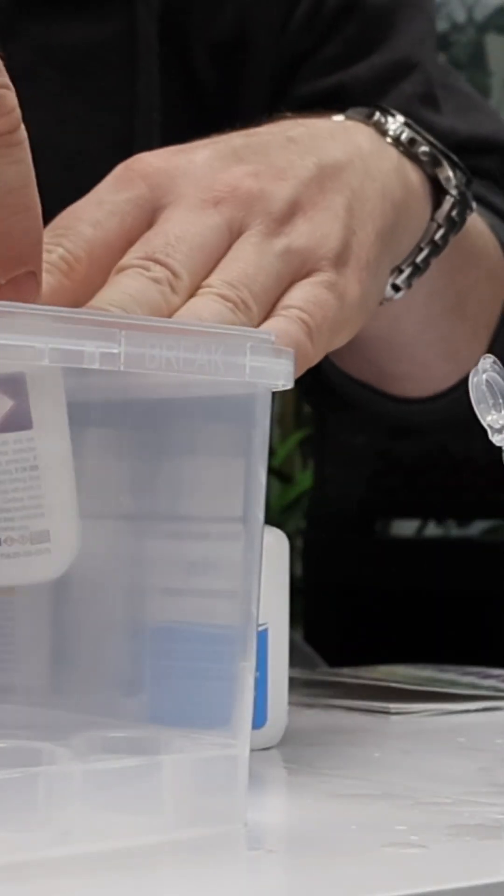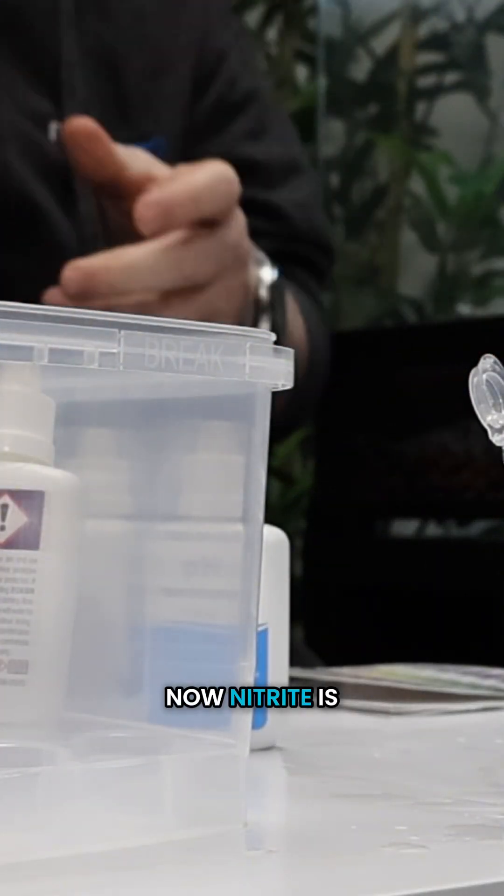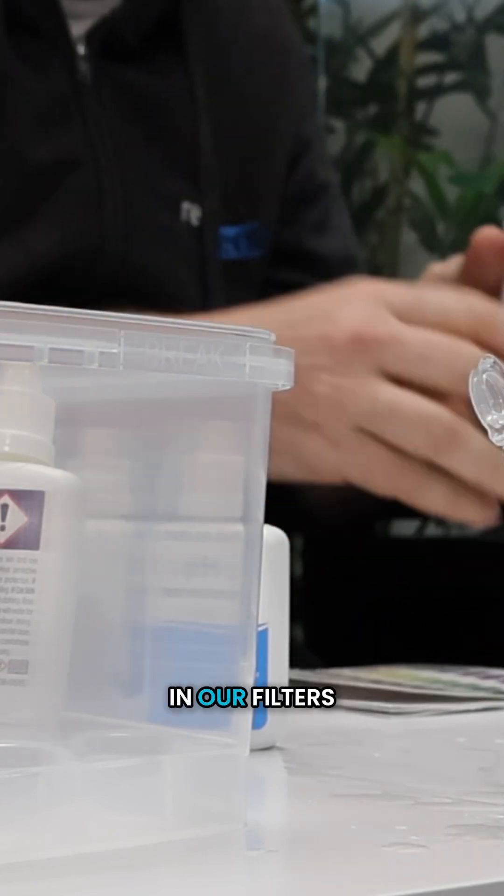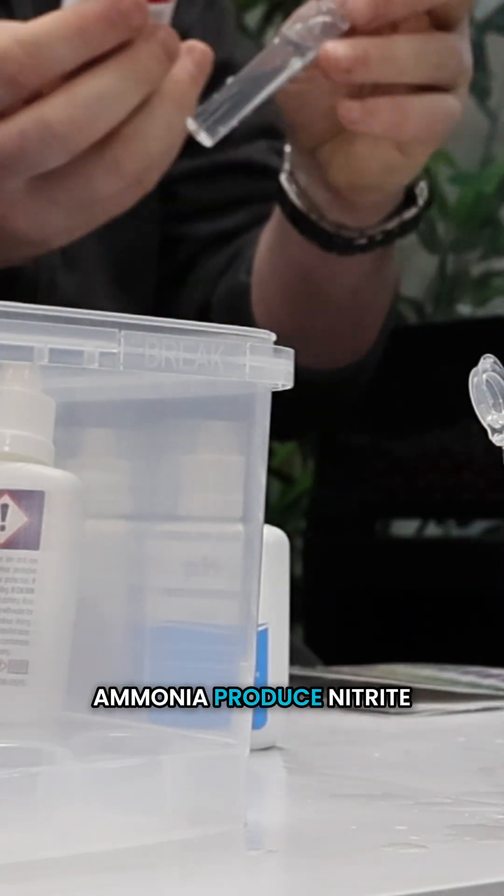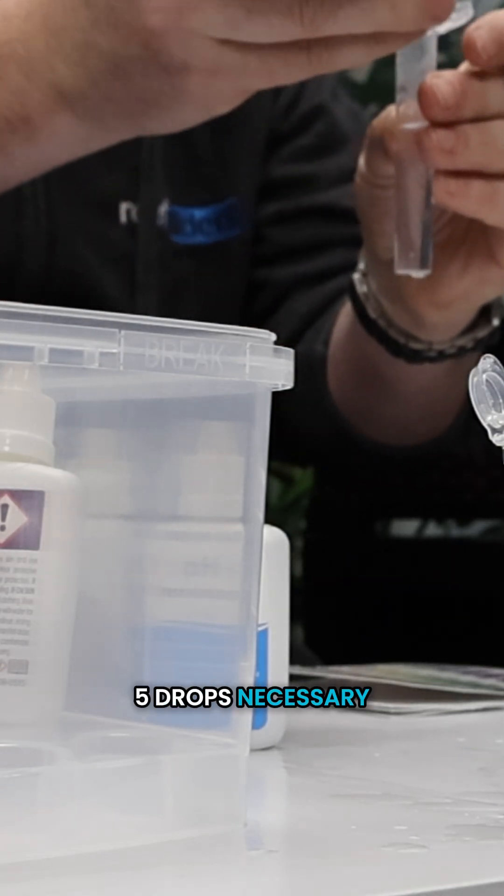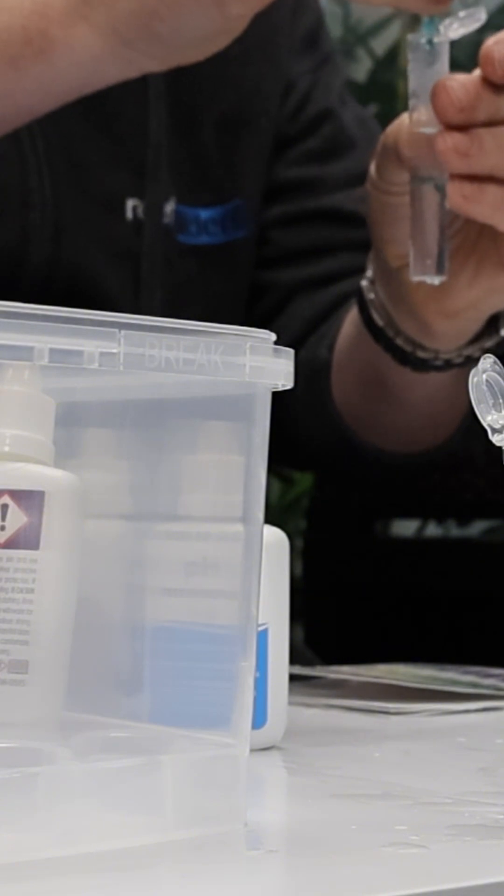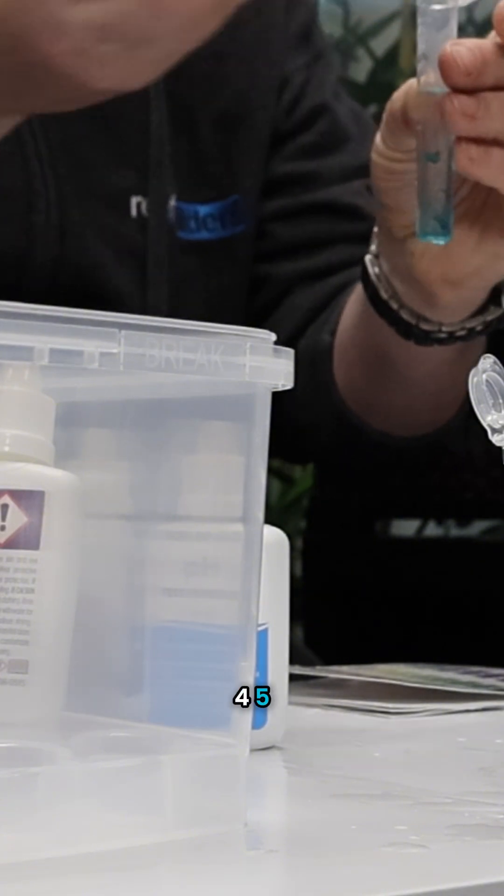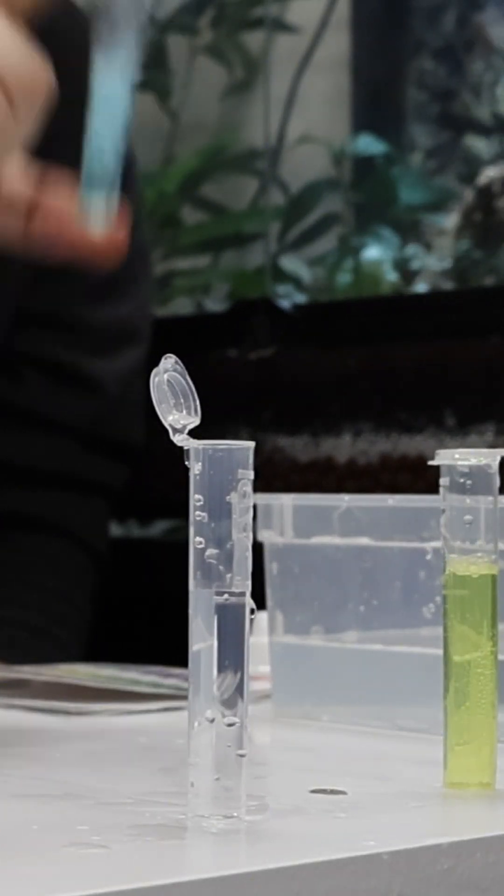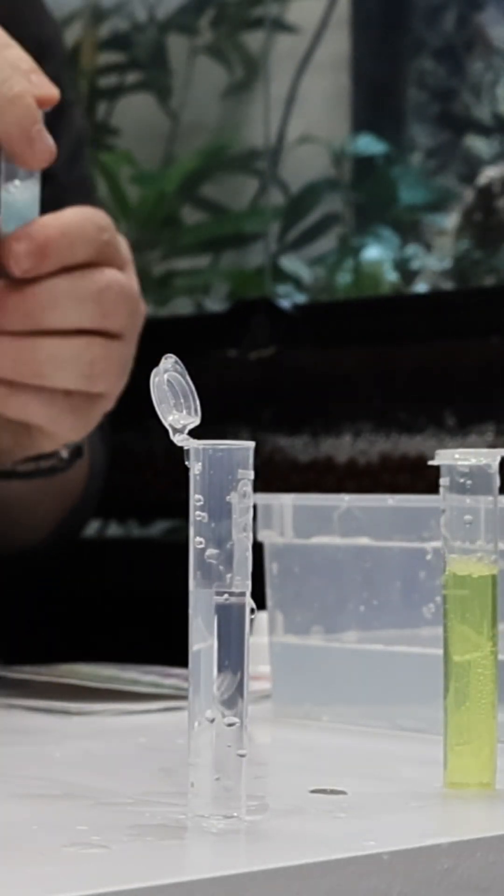Next test, nitrite. Now nitrite is a byproduct of ammonia conversion. The good bacteria that we put in our filters to break down ammonia produce nitrite, which is also bad, so let's test for that. Five drops necessary: one, two, three, four, five. Put that down, cap on, give it a shake, put that down.